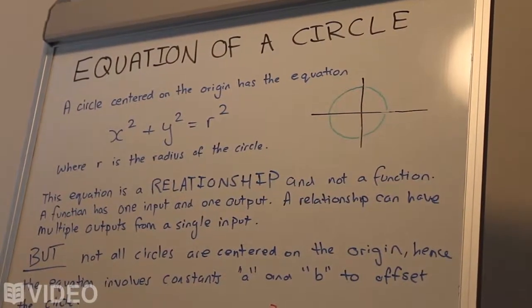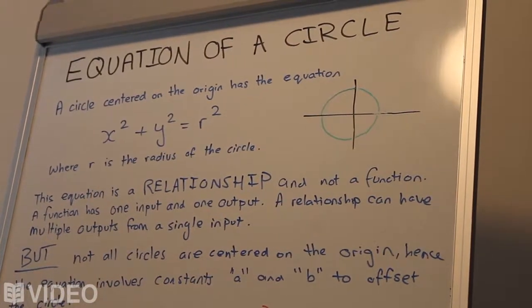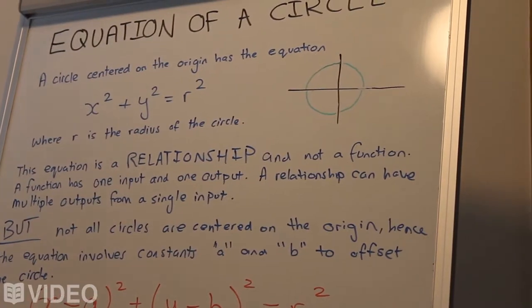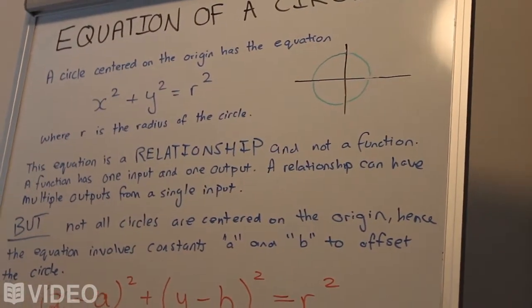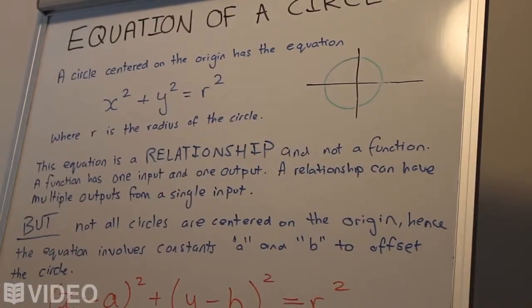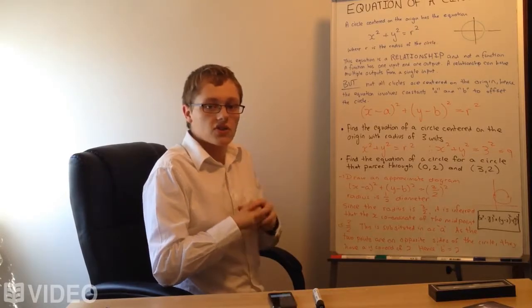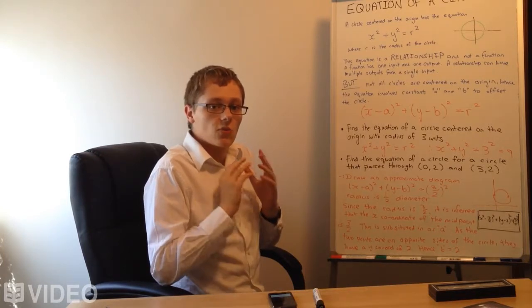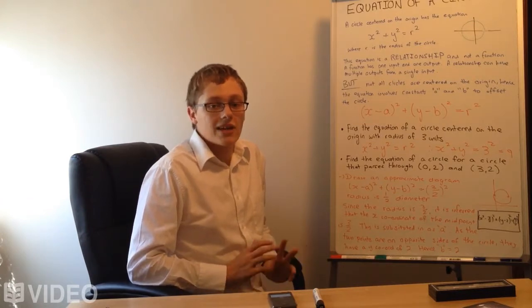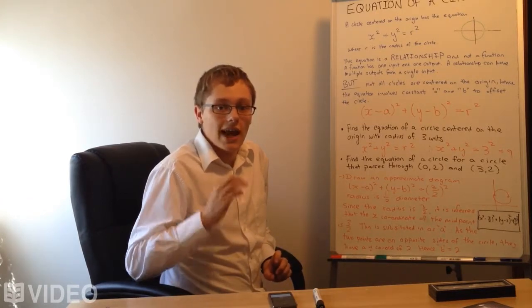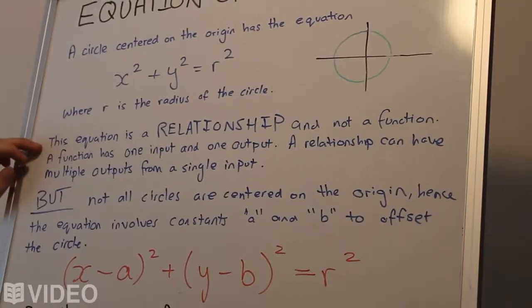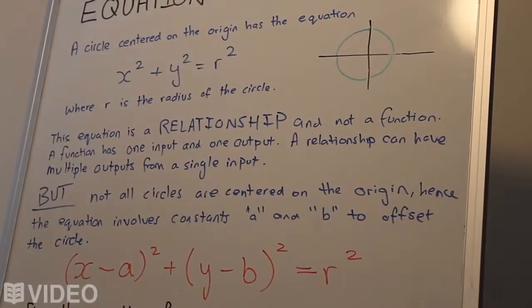First important piece of information. A circle centered on the origin has an equation x squared plus y squared equals r squared, where r is the radius of the circle. So keep that in mind before we go into some of the later concepts. We have x and y on the same side of the equation, and we can have multiple outputs for one input. So this equation is a relationship and not a function.